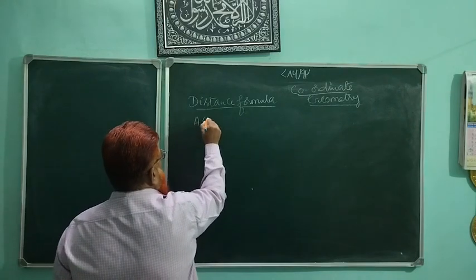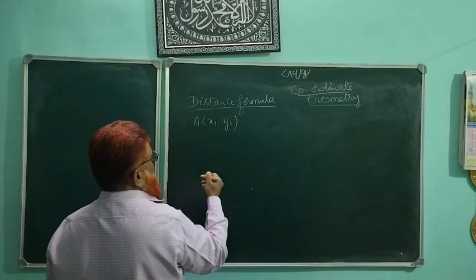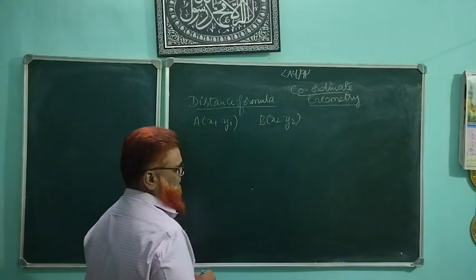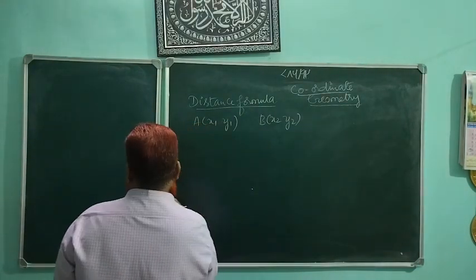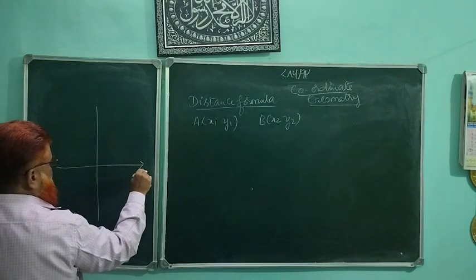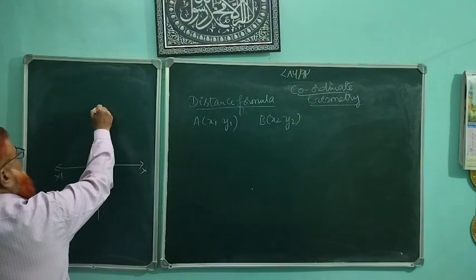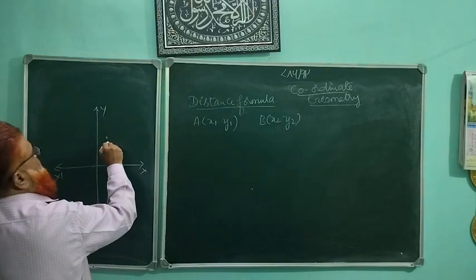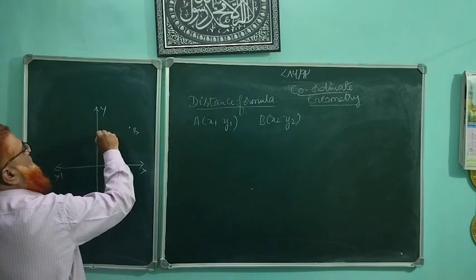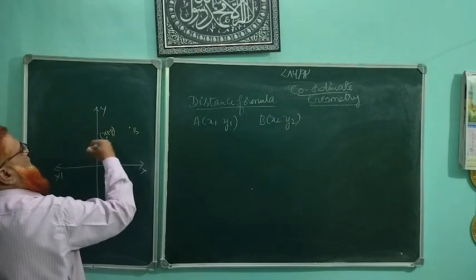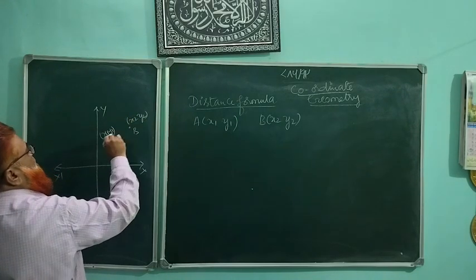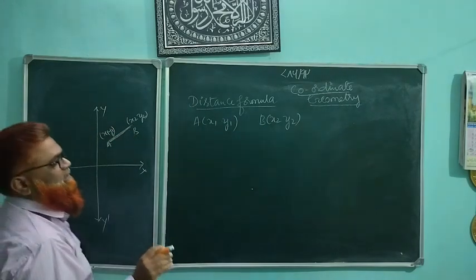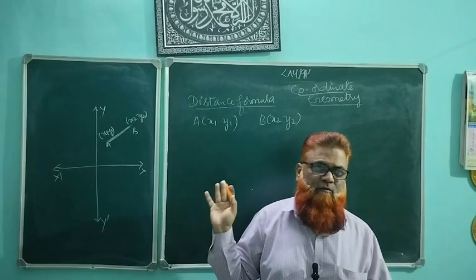Point A has coordinates x1 and y1, and point B has coordinates x2 and y2. On the graph we have x, x-dash, y, y-dash axes. There are 2 points — let A and B — with coordinates x1, y1 and x2, y2. Join these 2 points A and B; the distance between A and B can be found using our formula, which we call the distance formula.